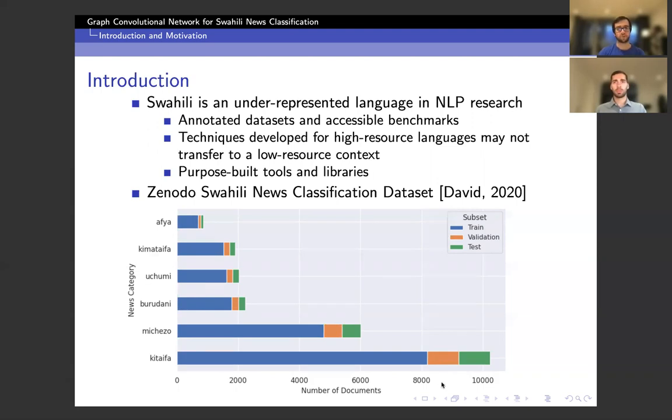In this work we're talking about today, we're using the Zenodo Swahili news classification dataset where each document is labeled into one of six news categories. And in the figure in the bottom here, you can see how these categories are distributed in our train validation test sets and it's key to note the class imbalance over all three subsets.